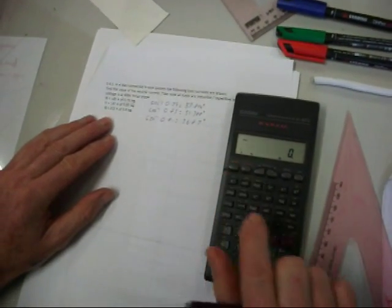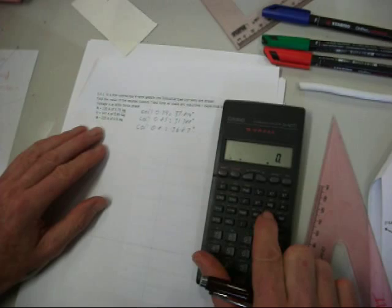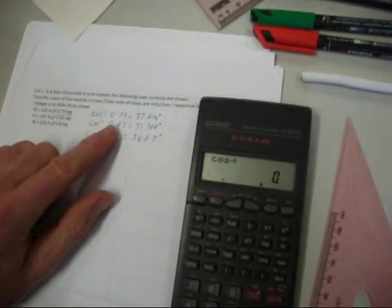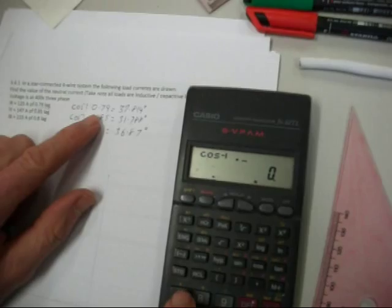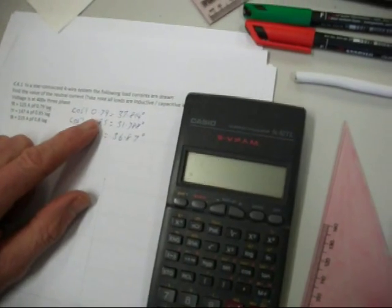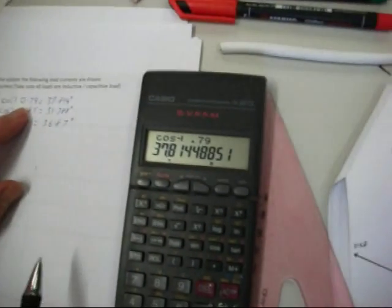Enter, inverse or shift, cos. 0.97 equals 37.814 degrees.